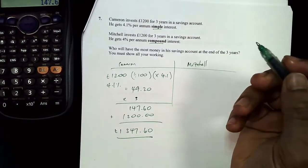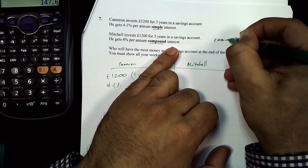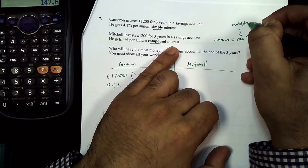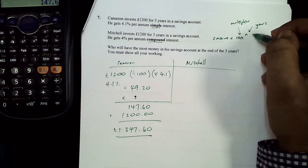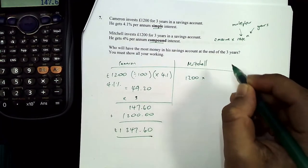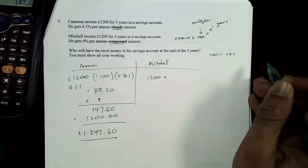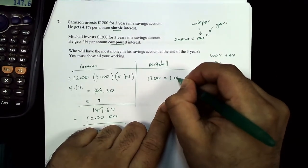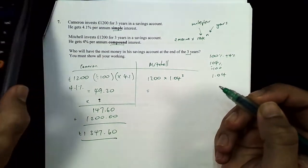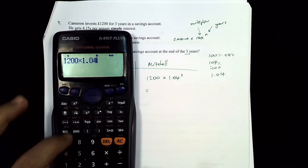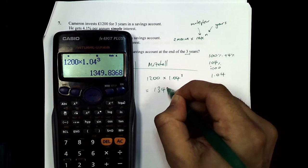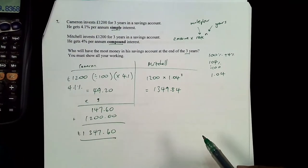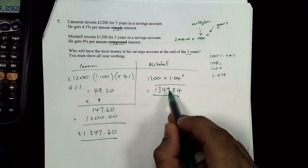For Mitchell with compound interest, the formula is: amount × (multiplier)^n. The multiplier for 4% interest is 100% + 4% = 104% ÷ 100 = 1.04. So it's 1200 × 1.04³. Calculating that: Mitchell ends up with £1349.84 (rounded to two decimal places — the digit after the 3 is a 6, so it rounds up).